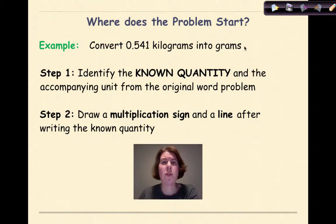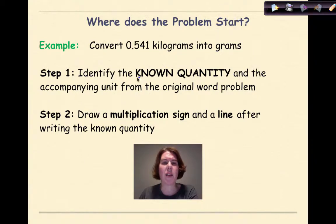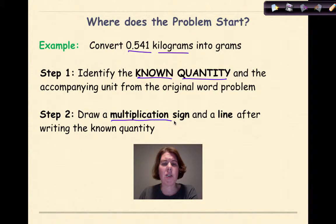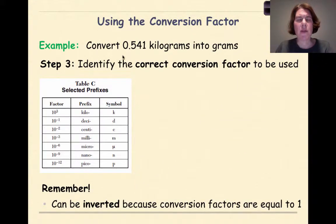So our first question is: where does the problem start? Let's look at an example — convert 0.541 kilograms into grams. Our first step is to identify the known quantity, the number that they give you, and the accompanying unit from the original word problem. In this case, the known quantity is 0.541 kilograms. Then, draw a multiplication sign and a line after writing the known quantity. The next thing is to figure out what conversion factor to use.